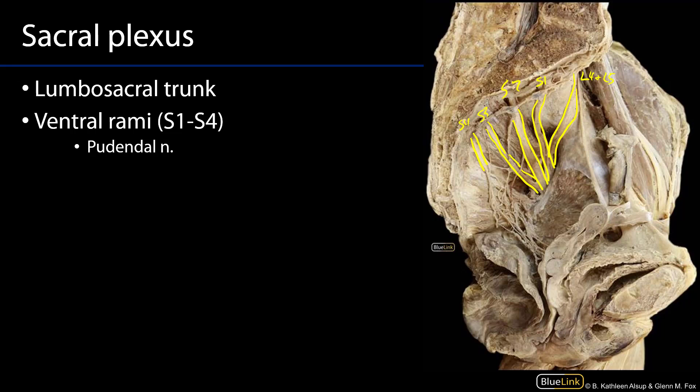In other contexts we've described how branches from either the sympathetic trunk — sacral splanchnics — or parasympathetic branches of these ventral primary rami, the pelvic splanchnics, contribute to the inferior hypogastric plexus. But keeping this somatic: derived from branches of S2, S3, and S4, we have the pudendal nerve.